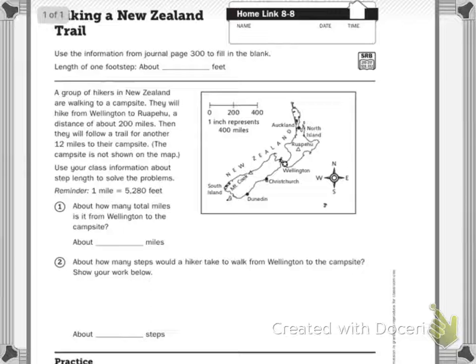Length of one footstep — this is whatever you figured out your footstep is. Miss DeBoer's is about one footstep, which is about two feet.